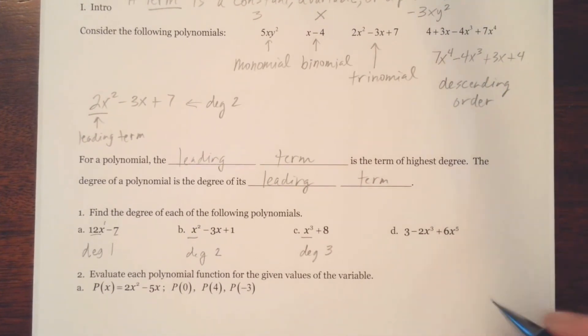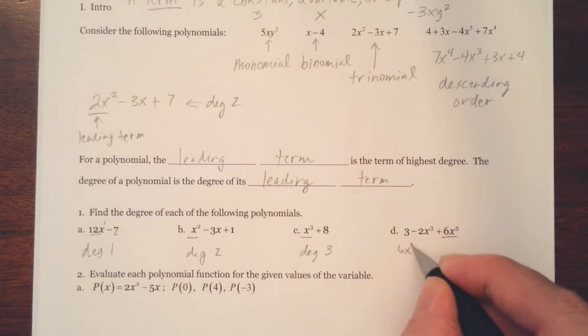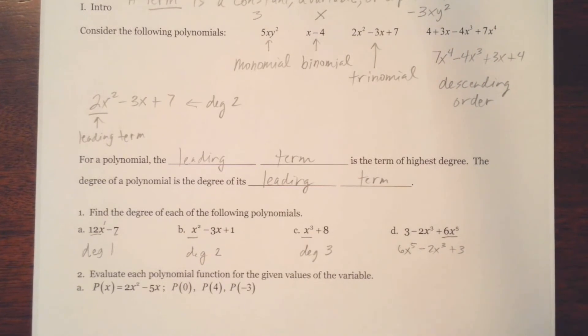Now notice here, this one's not written... I should just put it this way. This is our leading term. It's not the order that matters. It's the term of greatest degree. And that would be this term here. Now if you wanted to, you could write this in descending order. But the main thing is to know this polynomial has a degree of 5. So it's this term here that determines the degree.